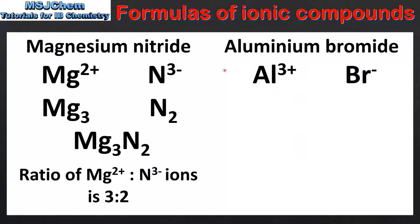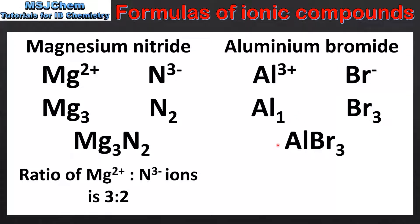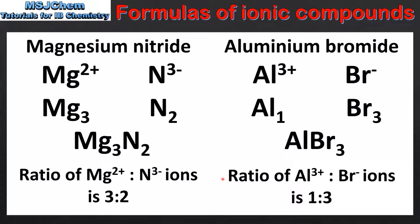Our next example is aluminium bromide, composed of aluminium ions and bromide ions. Using the crossover technique we take the 3 from the aluminium and write it as a subscript for the bromine, and the 1 for the bromine becomes a subscript for the aluminium. We then write it as a formula which is AlBr₃, and the ratio of aluminium ions to bromide ions in a formula unit is 1 to 3.